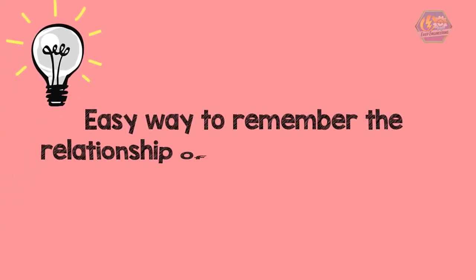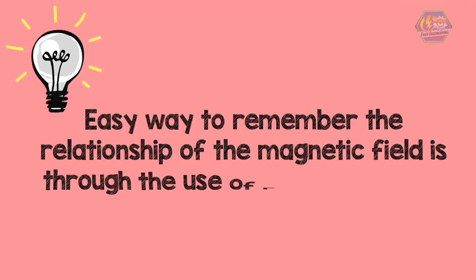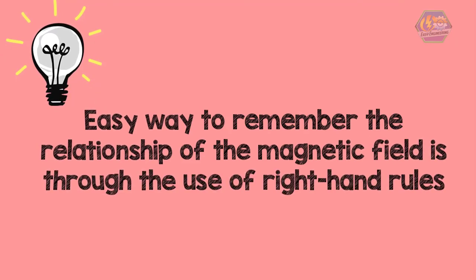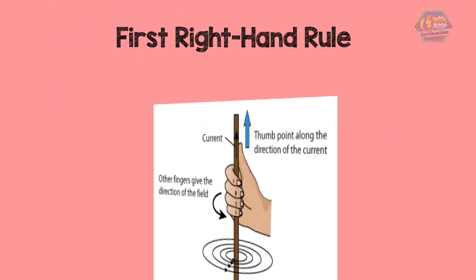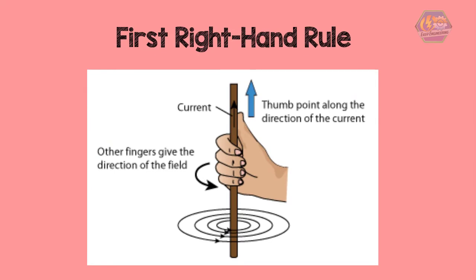An easy way to remember the relationship of the magnetic field is through the use of right-hand rules. There are three right-hand rules. The first right-hand rule can show the direction of the electric current and the direction of the magnetic field it produces. Just take your right hand and point your thumb in the direction of the electric current. Now curl your fingers — the direction your fingers are curling is the way the magnetic field lines are pointing. Likewise, if you know the direction of the magnetic field lines, you can use the rule to figure out the direction of the current in the wire.